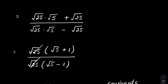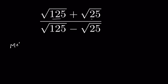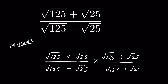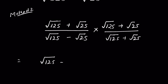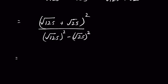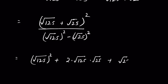In the second method, we don't simplify the radicals and instead rationalize from the beginning using the same concept of conjugate. So we have square root of 125 plus square root of 25 upon square root of 125 minus square root of 25, and we multiply and divide by the conjugate, which is square root of 125 plus square root of 25. The numerator becomes square root of 125 plus square root of 25 whole squared. Using a plus b whole square, this gives square root of 125 squared plus 2 times square root of 125 times square root of 25 plus square root of 25 squared.